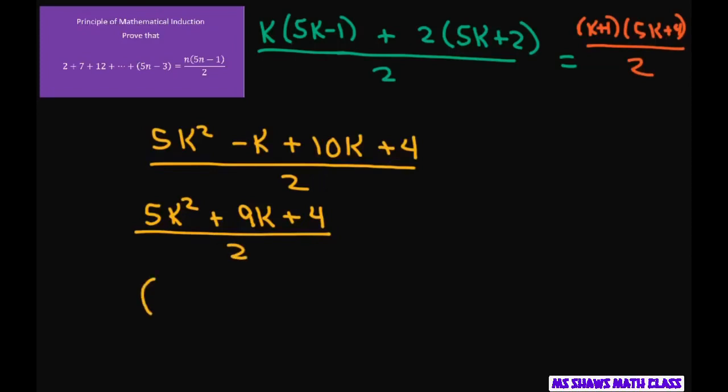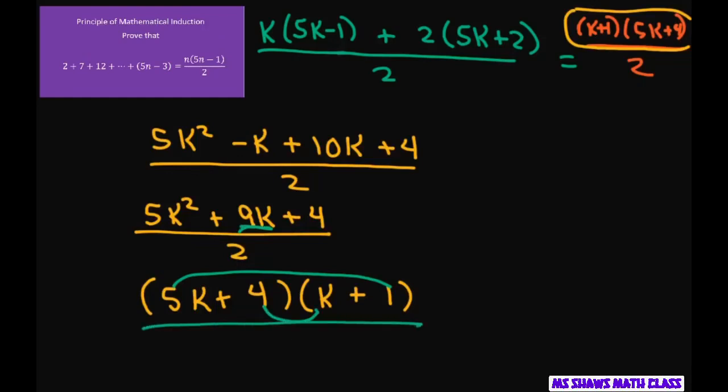Now, factoring this, I'm going to write 5k, k, and I have a 4. And I'm going to kind of cheat and look at what my answer is supposed to look like and make sure I did it right. So I'm going to go ahead and put the 1 here and the 4 here and double check that I did it right. So we should get a 9. So we get 5 plus 4 is 9. Everything else works out. So now that I factored that, it works out. And we proved that the right-hand side matches up to the left-hand side.